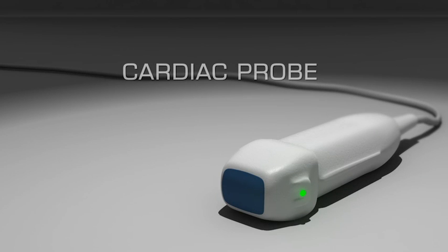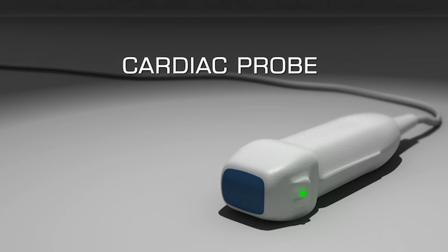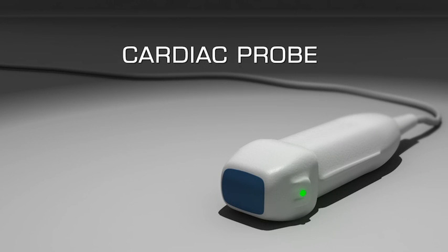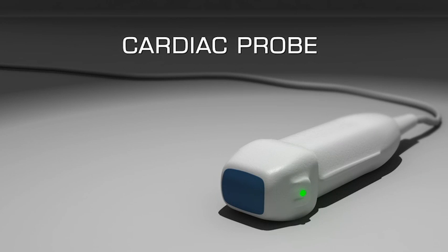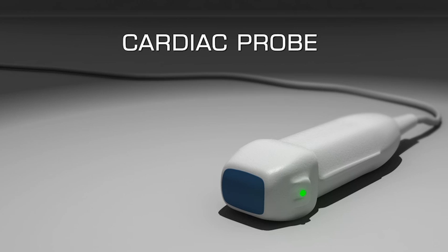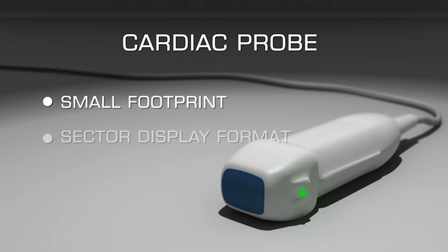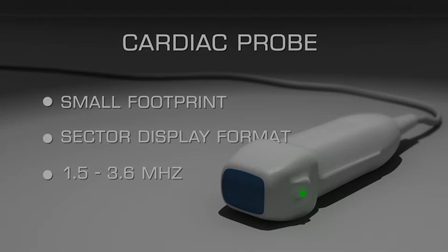Attach a probe suitable for cardiac imaging to the ultrasound device. It should have a small footprint, a sector display format, and a frequency range of 1.5 to 3.6 megahertz.